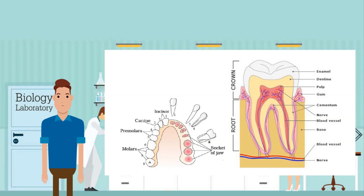Next, the gum — fleshy tissue that covers the bone and holds the tooth. Next, cementum — the part between the gum and the root dentine. Now, the nerve — nerve cells that allow the tooth to have a response. Lastly, the blood vessel, which provides nutrients for the inner sections of the tooth.